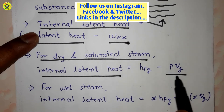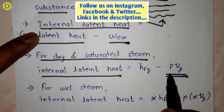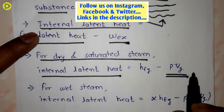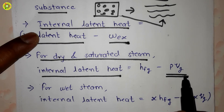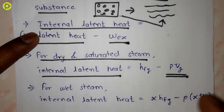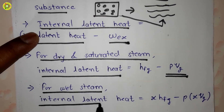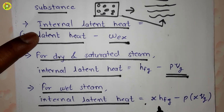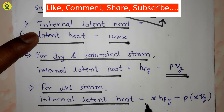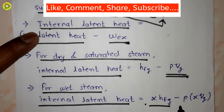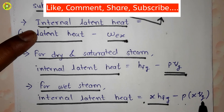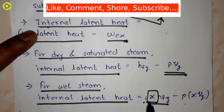For dry and saturated steam, the internal latent heat is equal to HFG minus P·VG, where P is the pressure and VG is the specific volume of dry and saturated steam. For wet steam, the internal latent heat is equal to HFG minus P·(x·VG), where x is the dryness fraction.